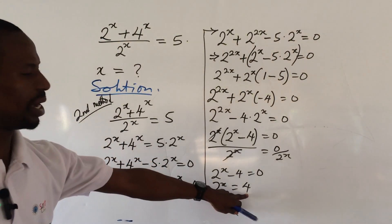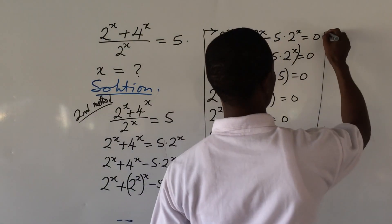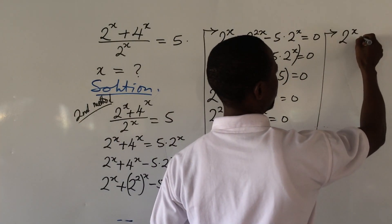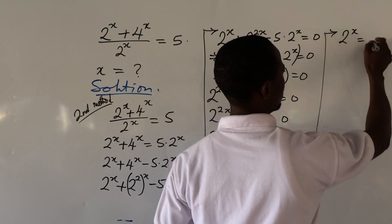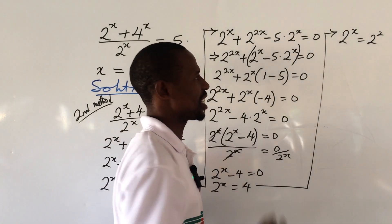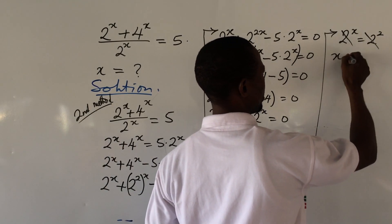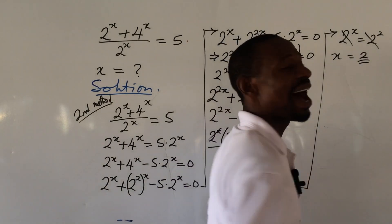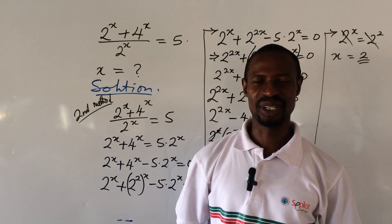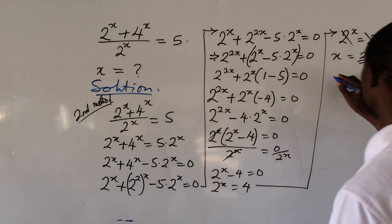We express 4 in base 2: 2^x = 2^2. The bases are the same so the exponents are equal, giving us x = 2. This confirms the result from the first method. Now let's look at the third method.